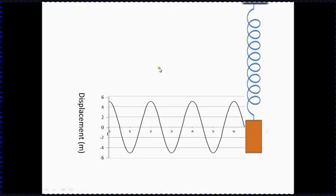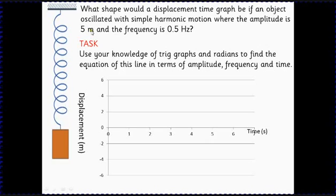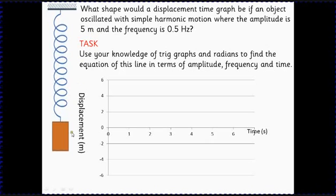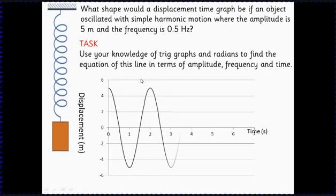It's a specific example here - let's just put some numbers in, maybe to make a bit easier. Suppose the amplitude is five meters and the frequency is 0.5 hertz. That means it's going to take two seconds to do one oscillation.